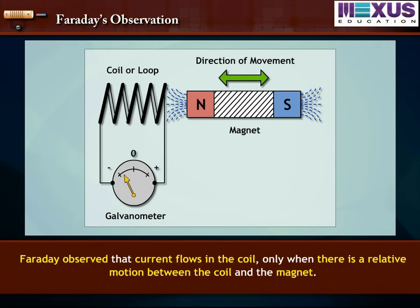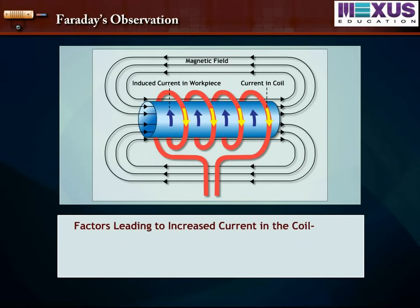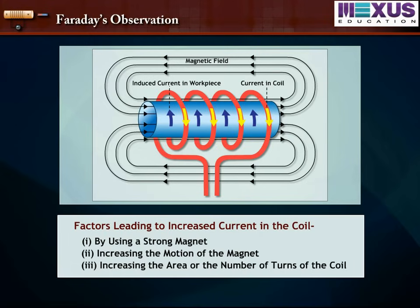Faraday observed that current flows in the coil only when there is a relative motion between the coil and the magnet. The direction of deflection in the galvanometer is reversed if the direction of motion is reversed. The current in the coil and the corresponding deflection of the galvanometer can be increased by using a strong magnet, by increasing the motion of the magnet, or by increasing the area or the number of turns of the coil.